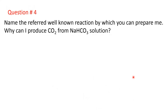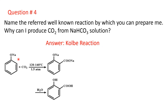Now question number 4: name the well-known reaction by which you can prepare me. The answer is the Kolbe reaction, by which you can prepare salicylic acid. In the Kolbe reaction, the phenoxide ion — that is sodium phenoxide or potassium phenoxide, because phenoxides are more reactive than phenol — is treated with carbon dioxide at 120 to 140 degrees centigrade and at 1 to 2 atmospheric pressure (say 1.5 atmospheric pressure). The sodium or potassium salt of salicylic acid is formed, which on acidification gives salicylic acid.